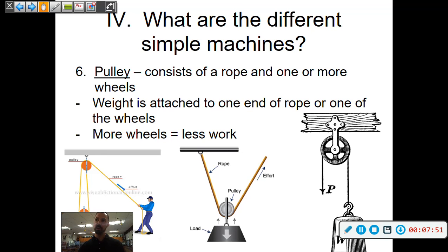Pulleys also. Consists of a rope or one or more wheels. And what they're allowing you to do is to lift heavier objects, reducing friction, also not fighting gravity as readily. So the weight is attached to one end of the rope or one of the wheels.